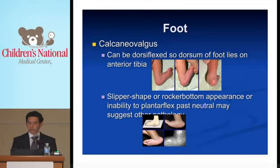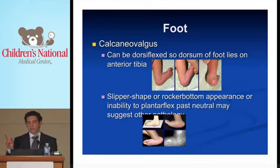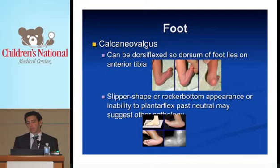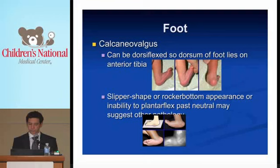The calcaneovalgus foot: we see this all the time. The foot can be dorsiflexed so the dorsum of the foot lies on the anterior tibia, which can be very disconcerting for parents. This is very different from a rocker bottom foot, which suggests another pathology such as congenital vertical talus. Two differences: in calcaneovalgus, the deformity occurs through the ankle joint, not through the tibia — if you see bowing of the tibia, that is not normal and we would like to see those patients. The other difference is that the calcaneovalgus foot can be brought past 90 degrees to a plantar flexion position; the rocker bottom foot cannot.